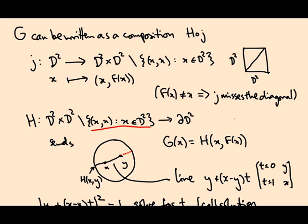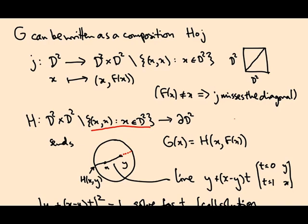So that proves Brouwer's Fixed Point Theorem. Very nice application of the fundamental group. It reduces a non-trivial statement about continuous maps to a trivial statement that the identity map of the integers does not factor through the zero map.